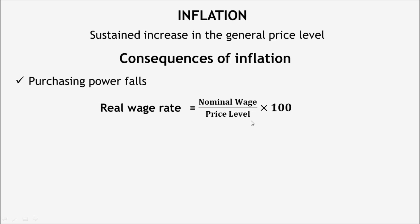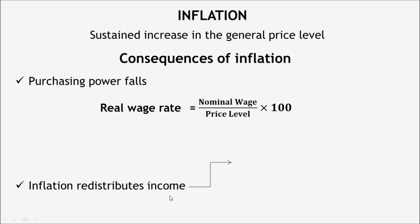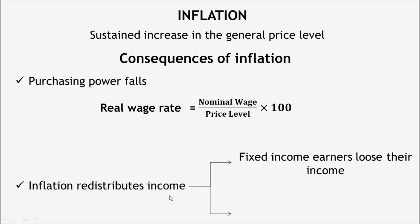Sometimes wages rise faster than prices and sometimes prices rise faster than wages. If wages rise faster than prices, inflation is not a problem as people can maintain even a better living standard. But when prices rise faster than wages, inflation is miserable. Moreover, inflation can redistribute income: fixed income earners lose in real terms during inflation, while borrowers gain.